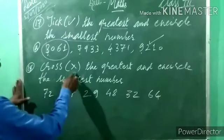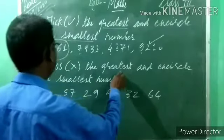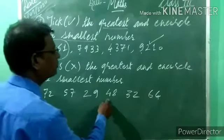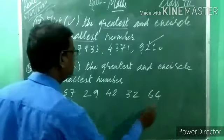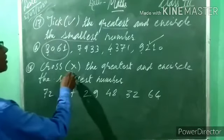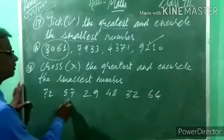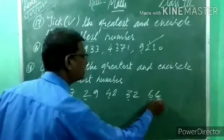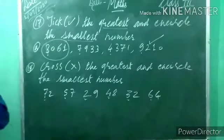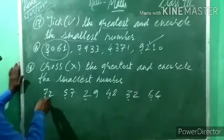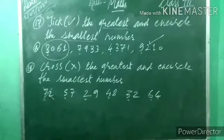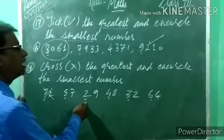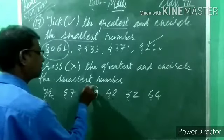Now the 18th example is similar — slightly different only. Cross means put a cross on the greatest number, and circle the smallest number. Look: the numbers are 72, 57, 29, 48, 32, and 64. Six different numbers. What do we have to do? Cross the greatest. Looking at the tens digits: 7, 5, 2, 4, 3, 6 — the greatest is 7, so 72 is the greatest number. Put a cross on 72. Now select the smallest: tens digits are 7, 5, 2, 4, 3, 6 — the smallest is 2, so 29 is the smallest. Put a circle for 29.